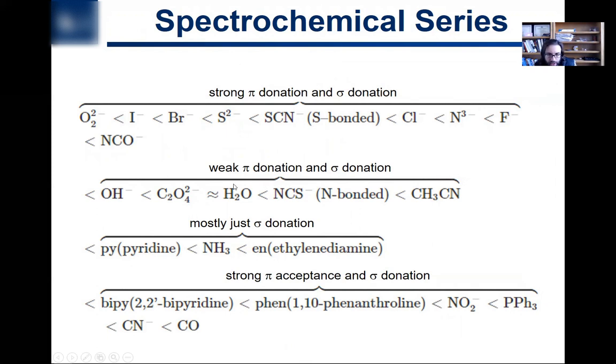Weaker pi donators or maybe no, just a little bit of pi donation, but a fair amount of sigma donation, you have to have sigma donation or else you don't have one. As shown here, things like water. Ammonia is kind of dead smack in the middle. And, you know, when we're talking about high-spin and low-spin complexes, ammonia is a good one to know.